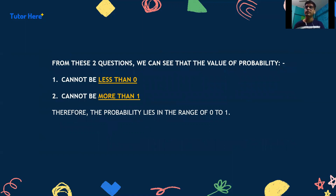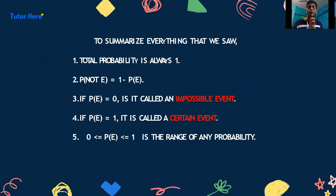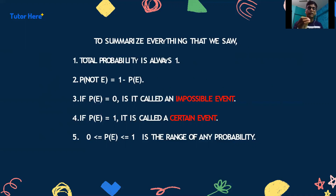From these two questions, we can say that the value of probability cannot be less than 0, and it cannot be more than 1. Therefore, probability lies in the range of 0 to 1. To summarise the theoretical content of this video: the total probability is always 1; P(E-bar) equals 1 minus P(E); if the probability of an event is 0 it is an impossible event; if it is 1 it is a certain event; and the range of any probability lies from 0 to 1.